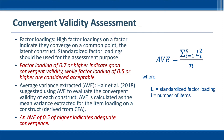There are several ways to evaluate convergent validity. The first method is to use factor loadings. High factor loadings on factors indicate they converge on a common point, the latent construct. Standardized factor loadings should be used for the assessment purpose because they range from negative 1 to positive 1. Factor loadings can be extracted from the confirmatory factor analysis. The rule of thumb is that factor loadings of 0.7 or higher indicate good convergent validity. Factor loadings of 0.5 or higher are considered acceptable.